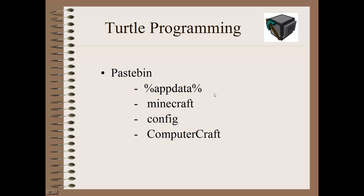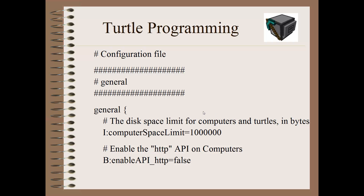To get started with Pastebin, go down to your Start menu and enter %appdata%. This will call up the folders where Minecraft is located. Go into the Minecraft folder, then the config folder, find ComputerCraft and open it up. Once ComputerCraft opens, you'll find a config file. Come down to where it says 'enable HTTP API on computers' — it says HTTP equals false. Change that false to true, then save the file and restart Minecraft. When you restart, you should be able to access the Pastebin command.